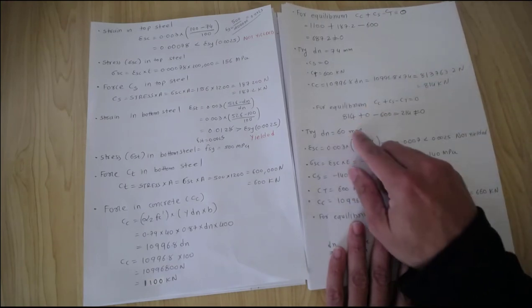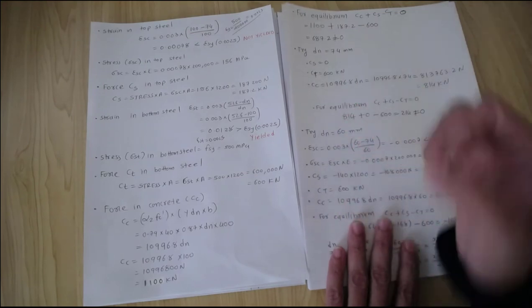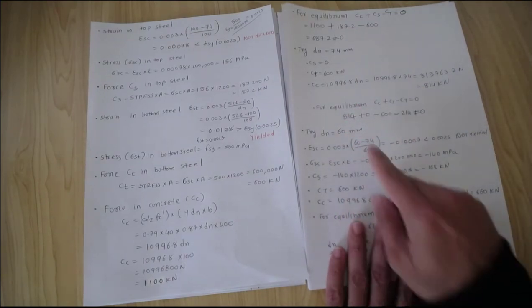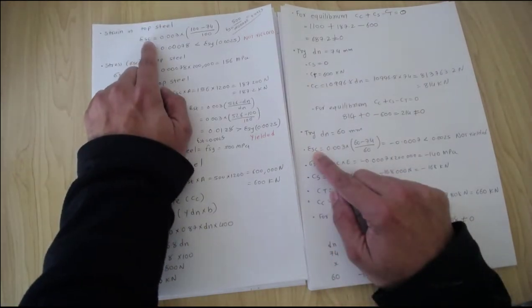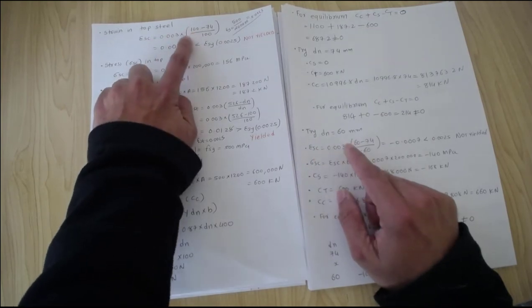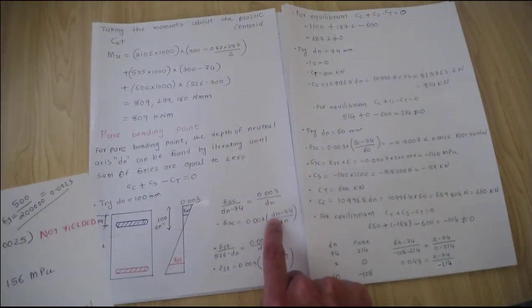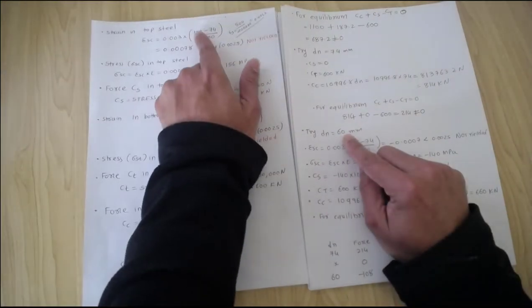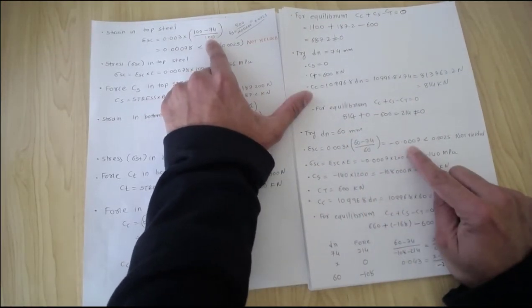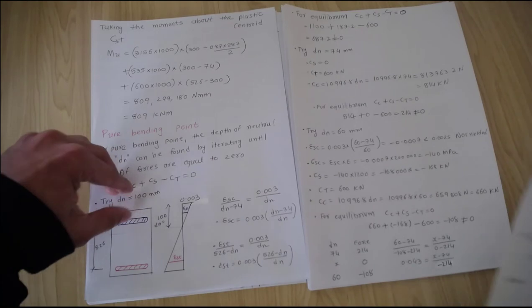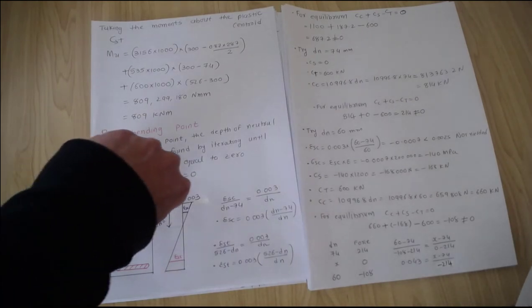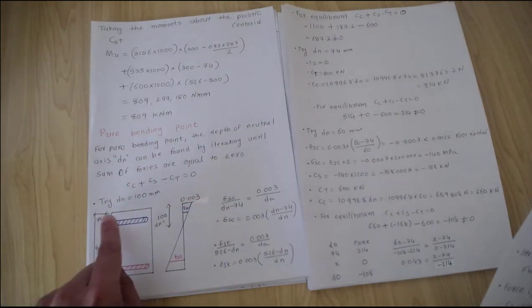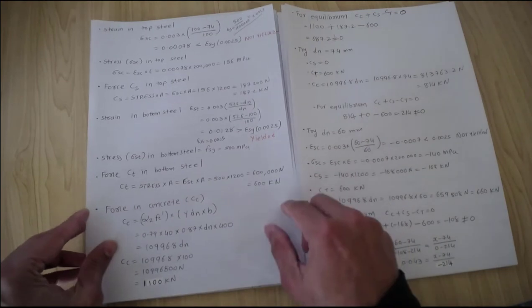We need to go further down. Let's put 60 millimeters — it could be 65, 55, or 50, but I'll try 60 millimeters. We follow the same procedure. We calculate the strain in the top steel using the same equation but putting dn equal to 60. If you put dn equal to 60 instead of 100, you will get a negative answer, because now dn is in this zone, meaning the top steel will be under compression.